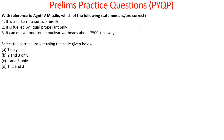With reference to Agni-4 missile, which statement is correct? It is a surface-to-surface missile — yes. It is fueled by liquid propellant only — no. It can deliver nuclear warheads up to 7,500 km — no. The answer is 1 only. Statements 2 and 3 are wrong: it uses two-stage solid propellant, not liquid, and its range is up to 4,000 km, not 7,500 km.